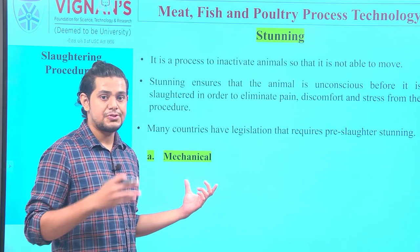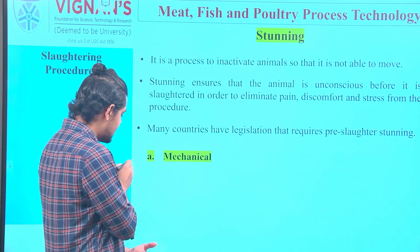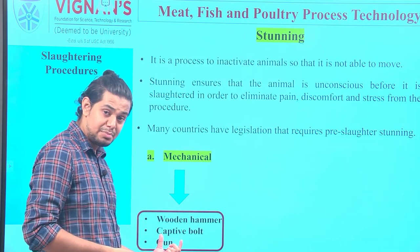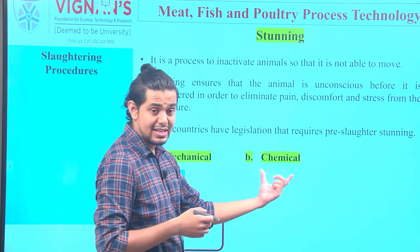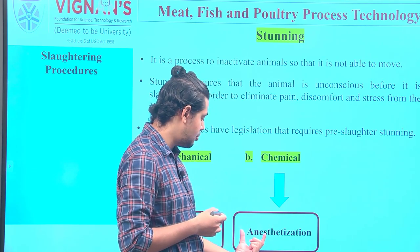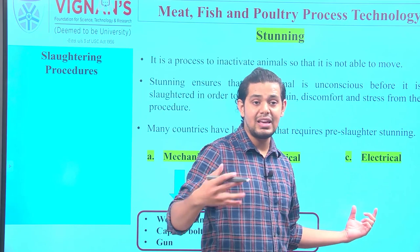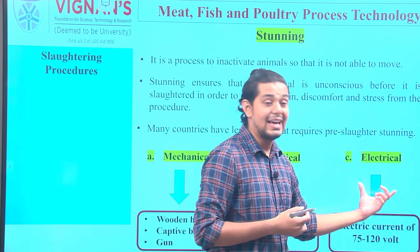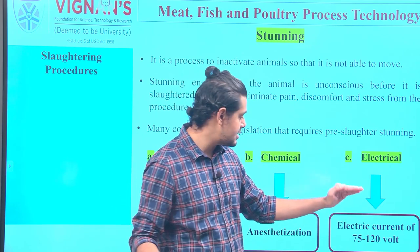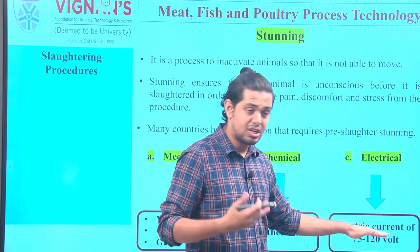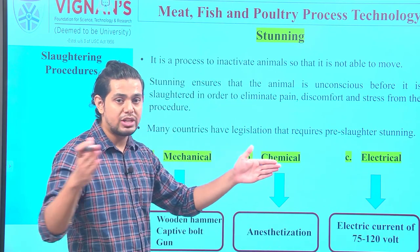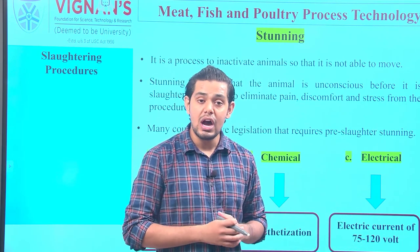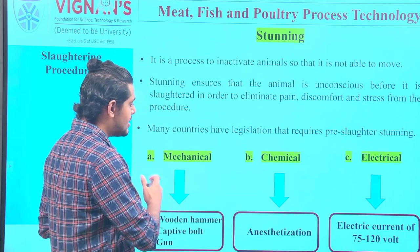There are three important types of stunning techniques. The first is mechanical stunning, performed using a wooden hammer, captive bolt, or mechanical gun. The second is the chemical method of stunning, which is mostly anesthetization, wherein chemicals are used to render the animal to an unconscious state. The third is electrical stunning, performed by subjecting the animal to an electric current of 75 to 120 volts to render it unconscious.